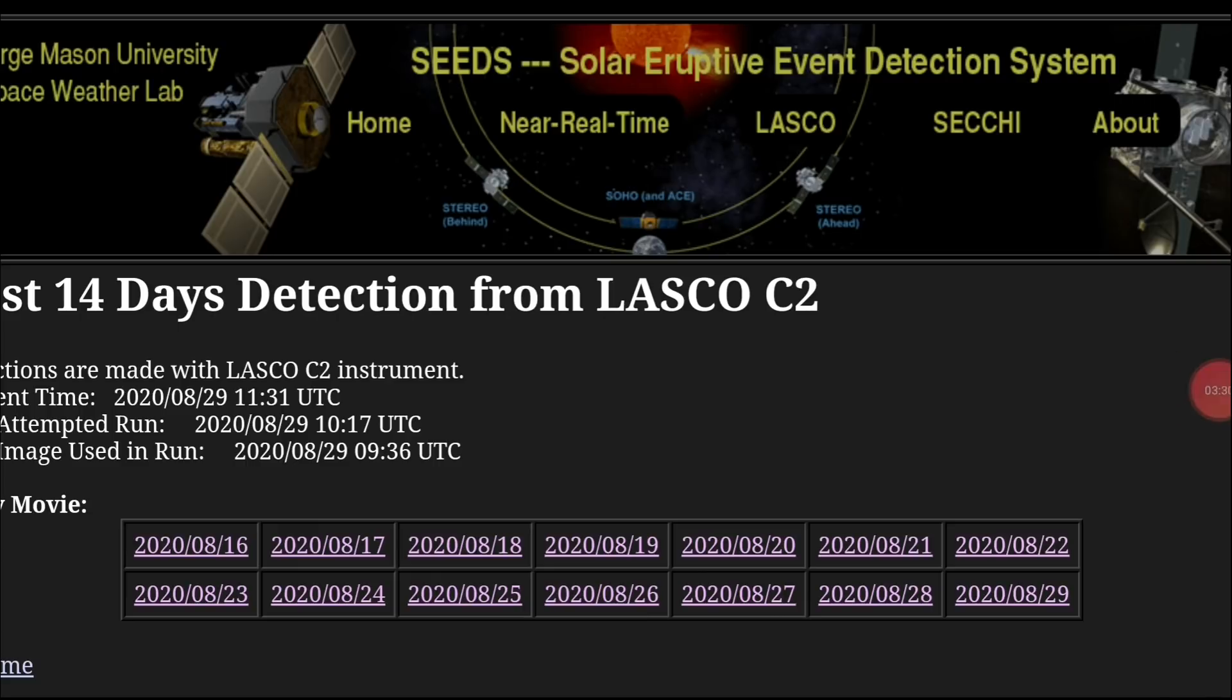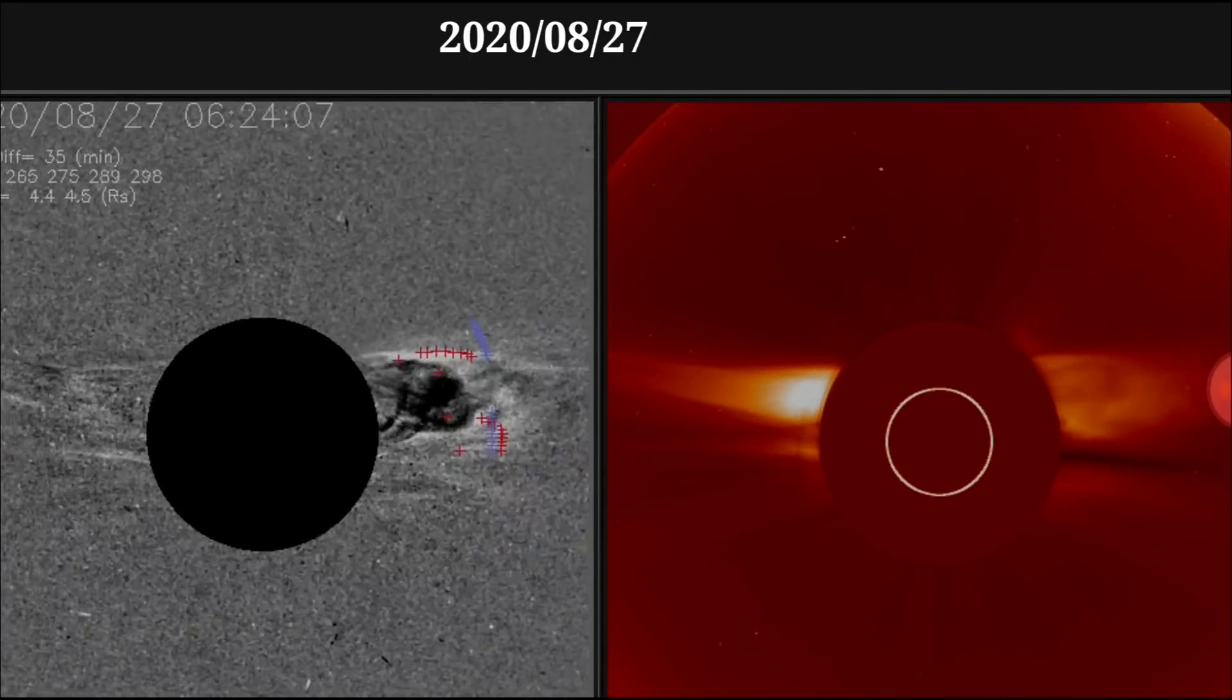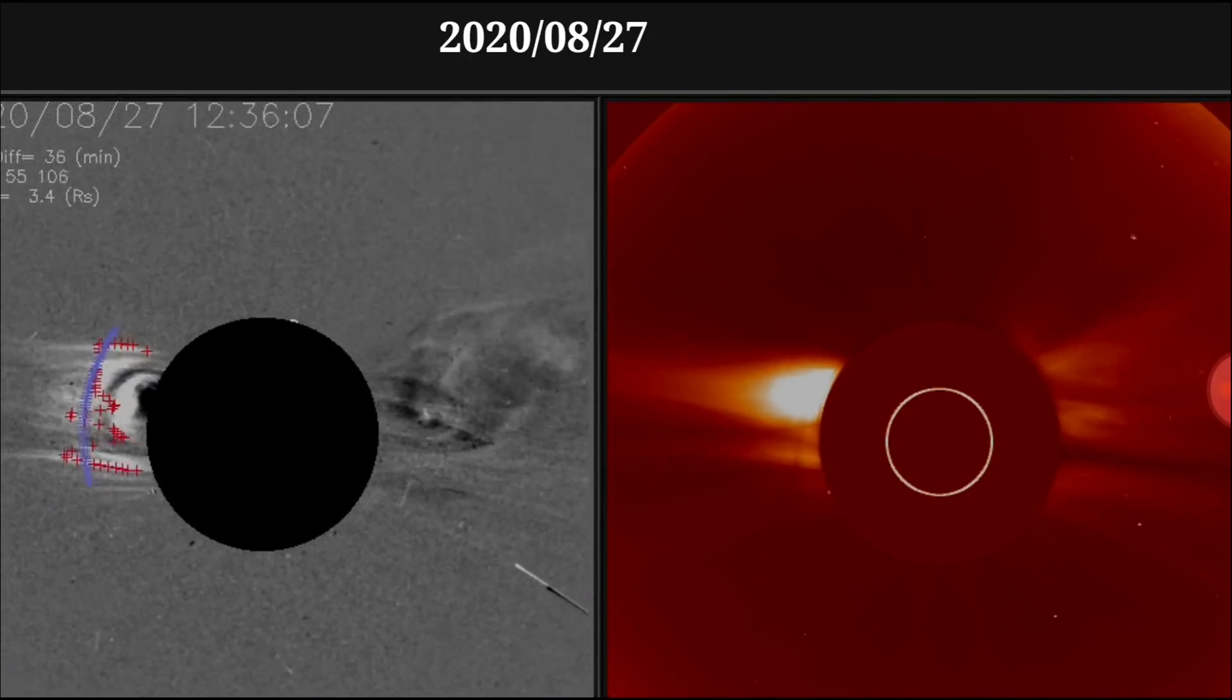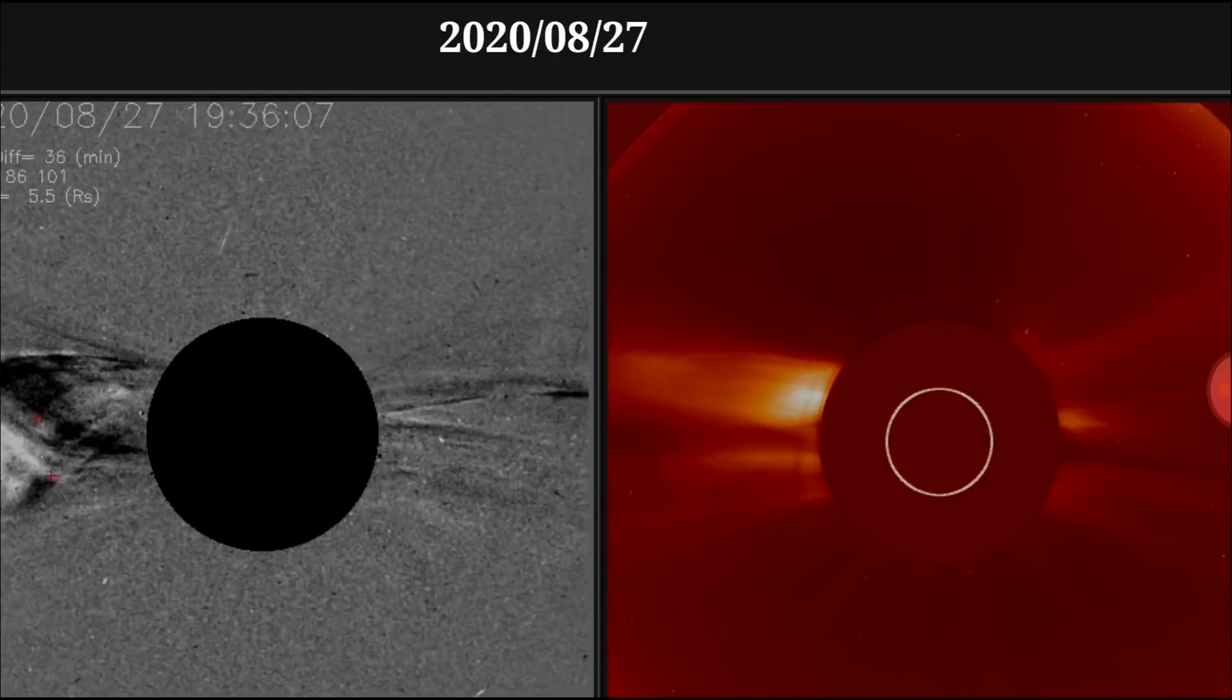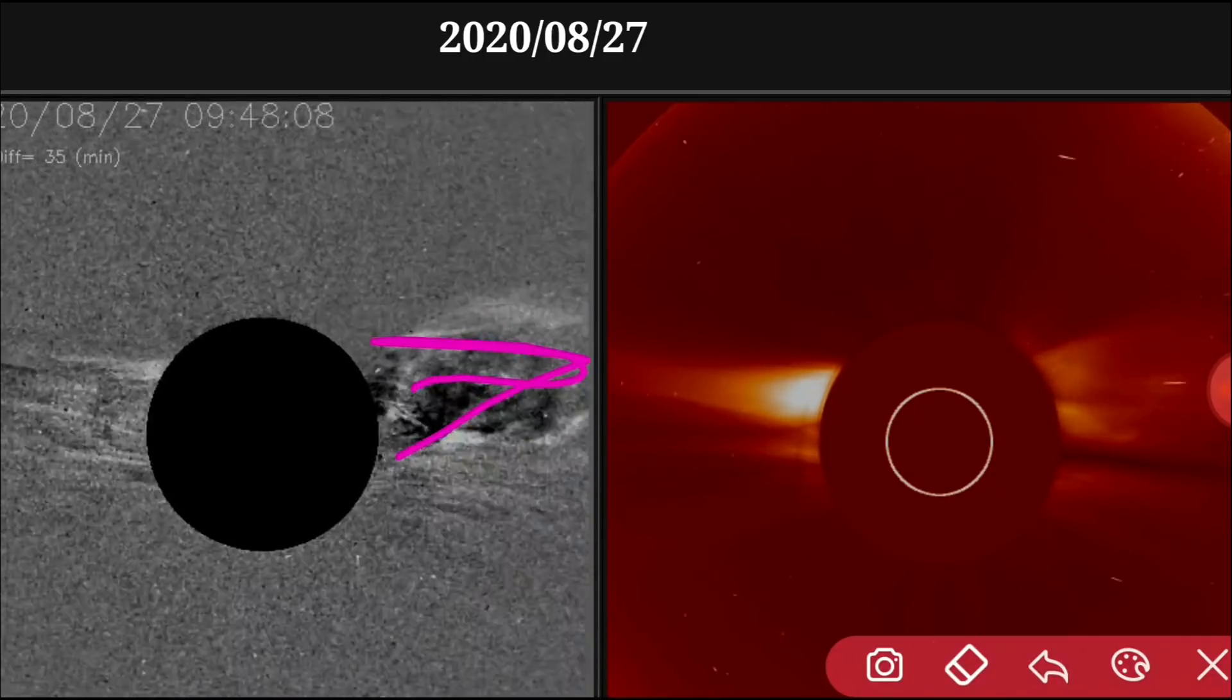But something that's kind of bothering me here, this is Lasco C2, and in my last video I showed you guys this. These are a couple CMEs that happened on the 27. Now I'm not sure exactly if these things are coming at us, and I'll show you what I'm talking about here in a second. I don't think this one especially is coming near us.